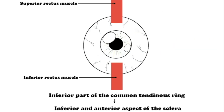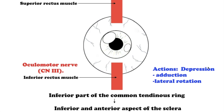The next muscle is the inferior rectus muscle. This muscle originates from the inferior part of the common tendinous ring and attaches to the inferior and anterior aspect of the sclera. The main movement is depression; it also contributes to adduction and lateral rotation of the eyeball. It is innervated by the oculomotor nerve.